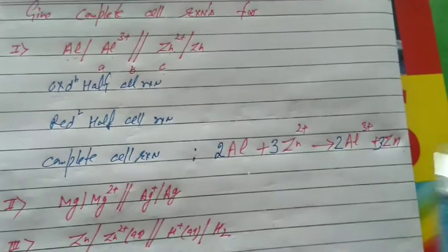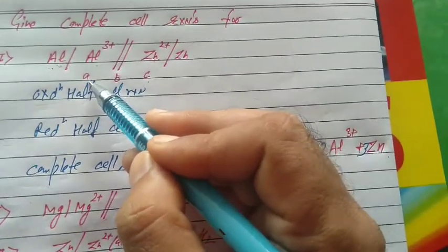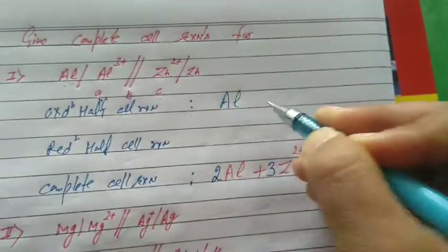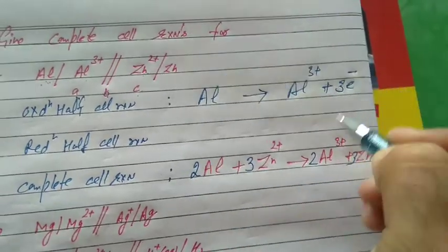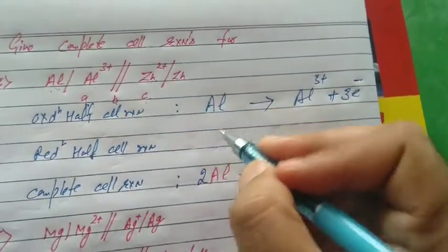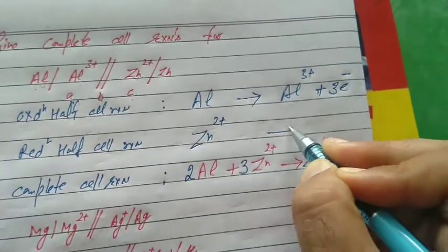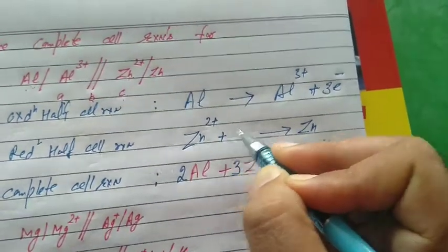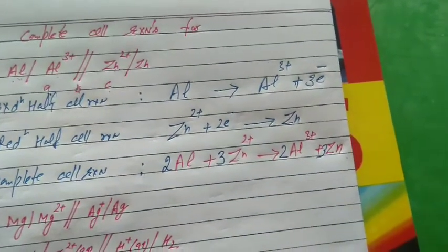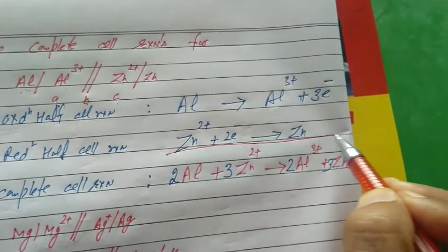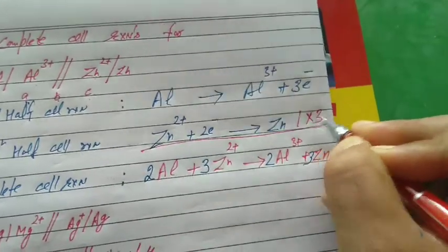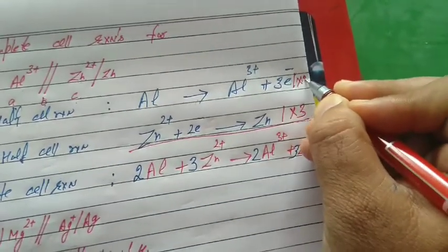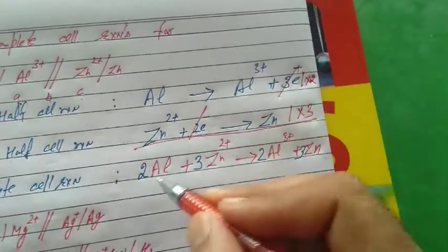If the demand is to give the oxidation half-reaction, oxidation takes place at anode. So from the cell notation, at anode: Al changes to Al³⁺ — loss of 3 electrons. That is the oxidation half-reaction. For the reduction half-reaction, that is the cathode part: Zn²⁺ changes to Zn — gain of 2 electrons. For the complete cell reaction, we add the oxidation and reduction half-reactions, but we must equate electrons: multiply the oxidation half by 2 (giving 6 electrons) and the reduction half by 3. The equation is automatically formed.